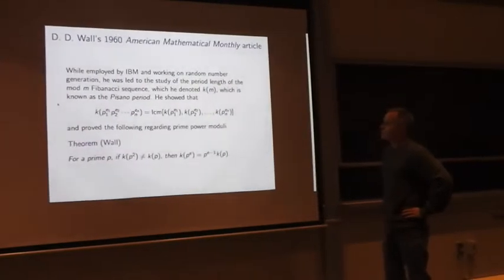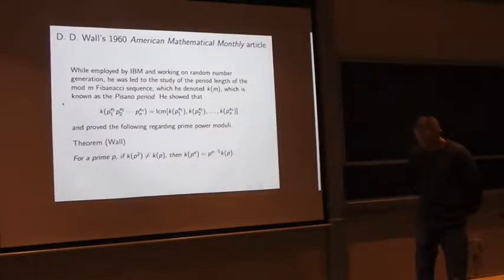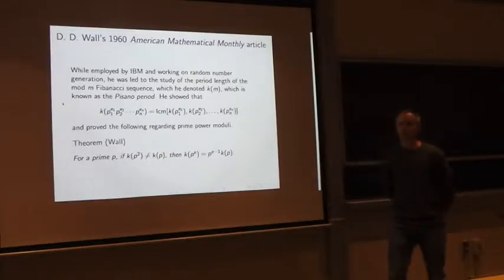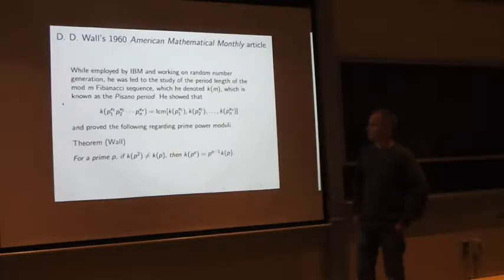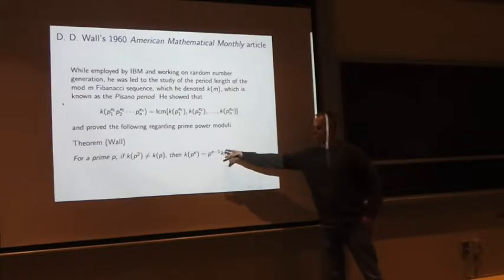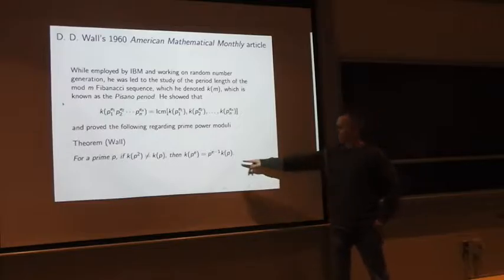The general facts that we know go back to actually this paper by D.D. Wall in 1960. Wall was a number theorist who spent most of his work in industry, and at the time he was working for IBM. He was doing research on random number generation and he was led to study these kind of sequences. He was interested in their length, which is sometimes known as the Pisano period, we're going to denote it K. And the first thing that he proved, although I suspect it was known earlier, was that for a product of prime powers, that the period is just the least common multiple of the individual periods. More interestingly, looking at powers of primes, he found that if the modulo P squared and P, that those periods, if they were different, then as we observed earlier, we can just say that the period of a power of a prime is just P to the exponent of minus 1 times the original period of K and P.